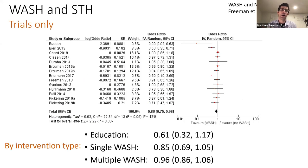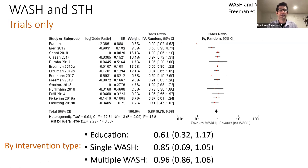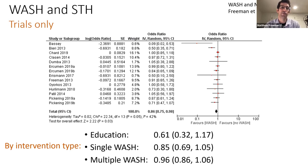This is data from a new Cochrane systematic review using only high-quality trials from the past several years. At the bottom, we find a point estimate of 0.86 for the impact of WASH on STH prevalence, meaning a statistically significant reduction of 14% in the odds of STH for these rigorous field trials. Our evidence is getting better and we're now seeing more statistically significant impact of WASH on STH.